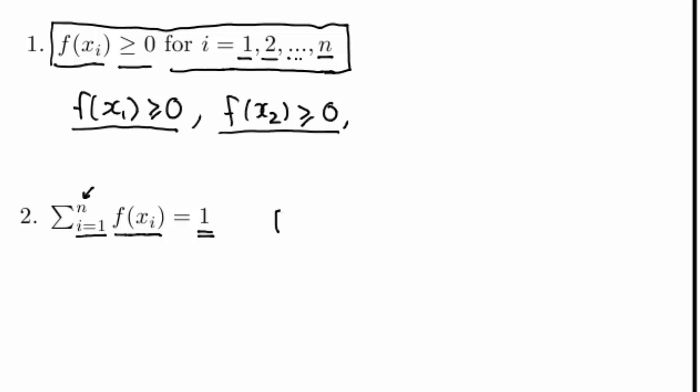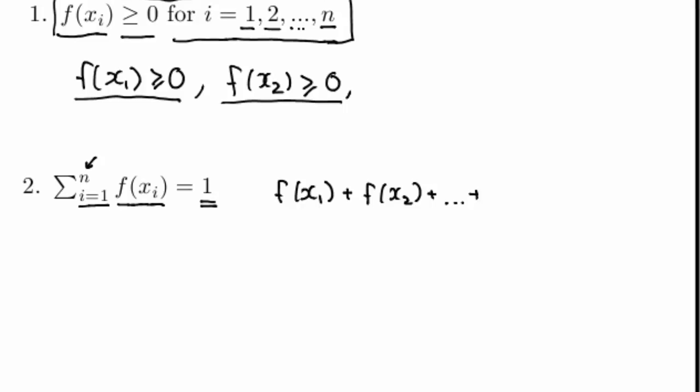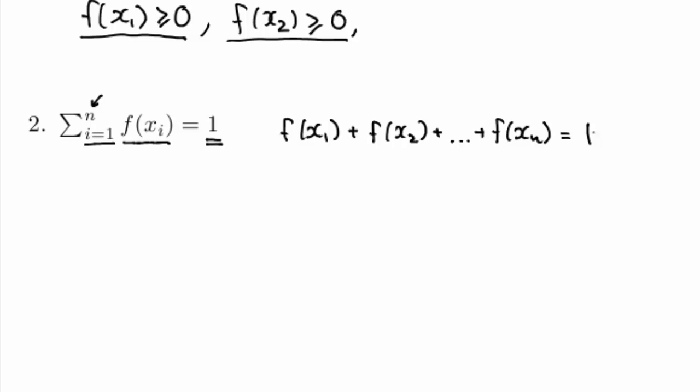If you like you can write this just as well as f of x1, probability of the first outcome, plus f of x2, probability of the second, plus keep on going until we've added the probability of the final outcome, and that should be 100%.